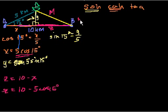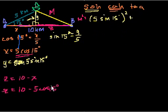So m squared is equal to, well, what's y squared? y squared is 5 sine of 15 degrees. So it equals 5 sine of 15 degrees squared plus, what's z squared? z is this, right? z squared plus, I'm running out of space, 10 minus 5 cosine of 15 degrees squared.